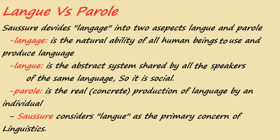The first dichotomy is langue versus parole. Saussure divides language into two aspects: langue and parole. Langue is the natural ability of all human beings to use and produce language. Parole, on the other hand, is the abstract system shaped by all the speakers of the same language, so it is social.